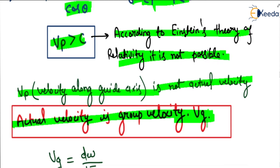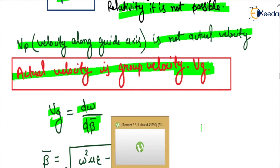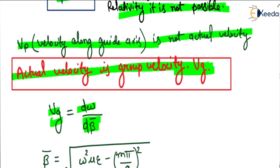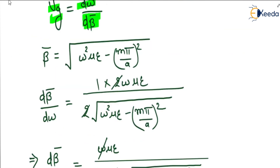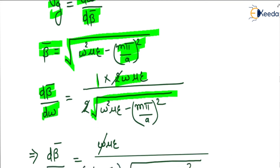The actual velocity in this case is the group velocity, which is due to multiple reflections and multiple waves. Group velocity is defined as dω/dβ̄, the differentiation of ω with respect to beta bar. Since beta bar equals the square root of ω²με minus (mπ/a)², differentiating gives dβ̄/dω equals 1/(2√(ω²με − (mπ/a)²)) times 2ωμε.